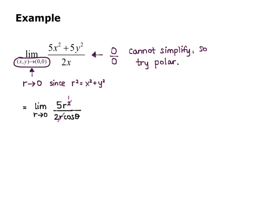Now the r on the bottom cancels one of the r factors in the numerator, and this is equal to the limit as r goes to 0 of 5r over 2 cosine theta. And notice that r is going to 0, and this doesn't matter what the angle is. So it's independent of theta.